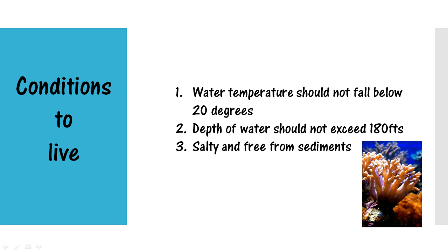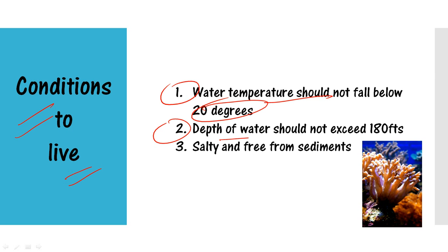From a prelims point of view, we should know the best conditions for corals to live. First, the water temperature should not fall below 20 degrees Celsius. Second, the depth of the water should not exceed 180 feet, because beyond this depth sunlight is too faint for photosynthesis to take place. Third, the water should be saltish and free from sediments.